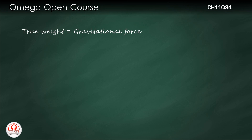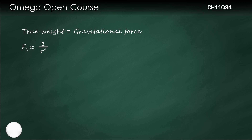The true weight of an object is the gravitational force acting on the body. The gravitational force is inversely proportional to the square of the distance from the centre of the Earth. Therefore, if F0 is the gravitational force at the surface of the Earth, then the gravitational force at distance R from the centre of the Earth is equal to F0 into R squared divided by R squared, where R is the radius of the Earth.